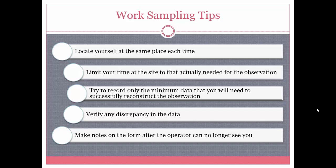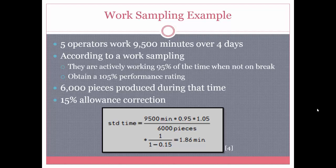Here is a work sampling example. Five operators work 9,500 minutes over four days. Work sampling shows they are actively working 95% of the time when not on break, and they have a performance rating of 105%. If 6,000 pieces were produced during this period and there is a 15% allowance correction, standard time is calculated by multiplying 9,500 by 0.95 by 1.05, dividing by 6,000, then multiplying by 1 over (1 minus the allowance). The standard time is 1.86 minutes per piece.